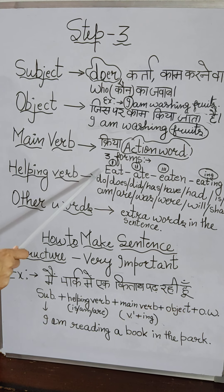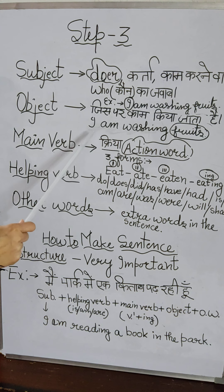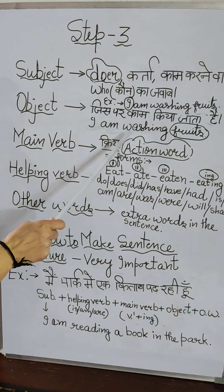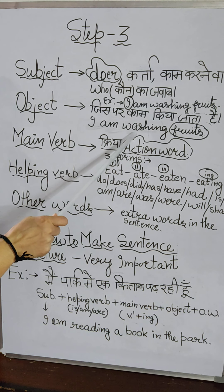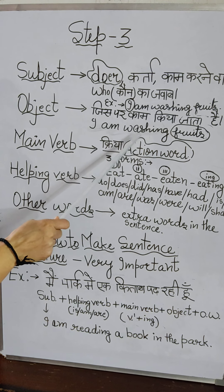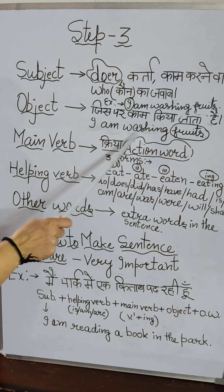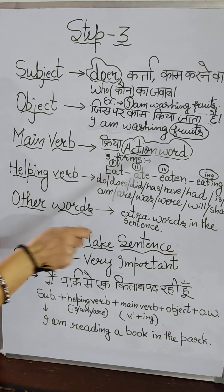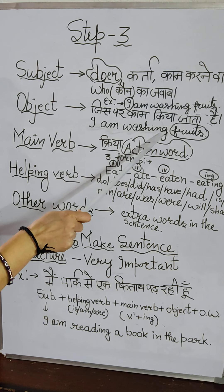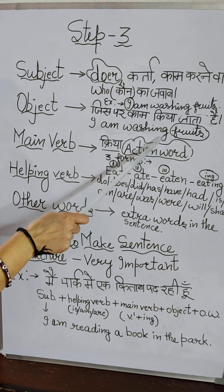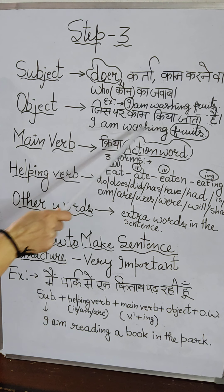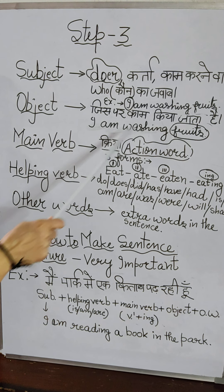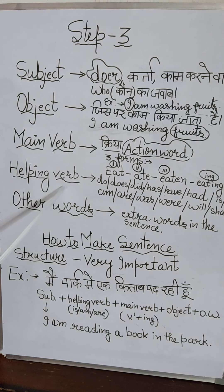For example, 'I am washing fruits' — so what are we doing here? Washing. So I have put -ing here. I am washing. I need to know which verb form to use, and after that I will tell you more.